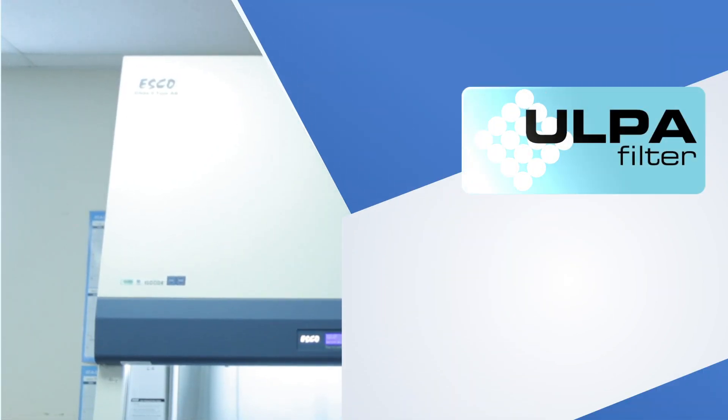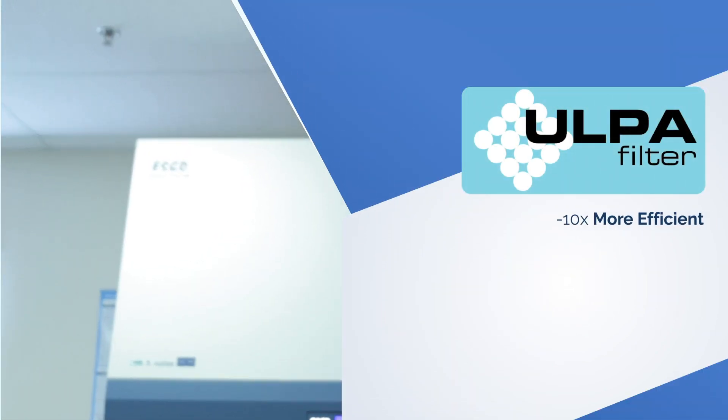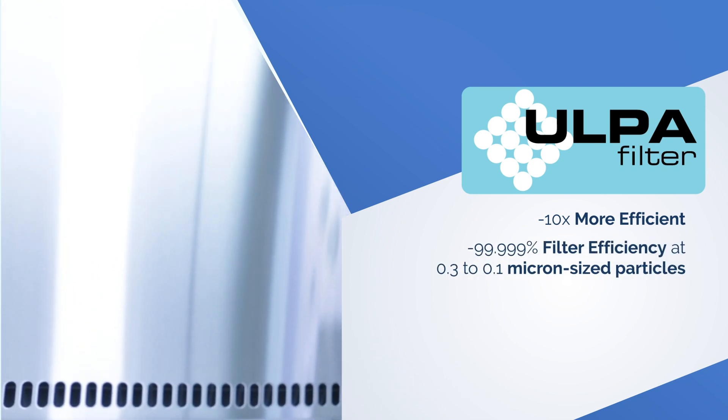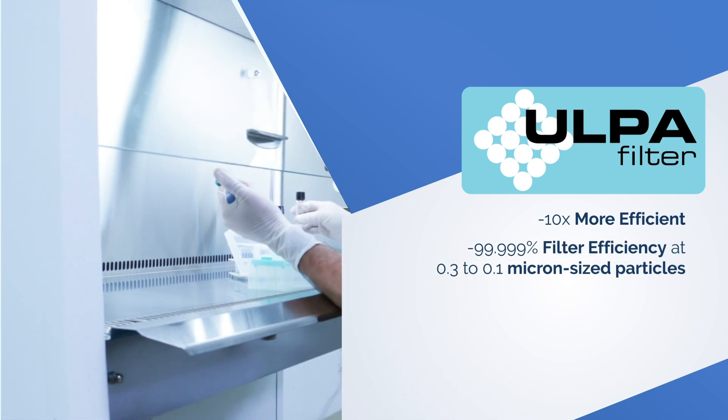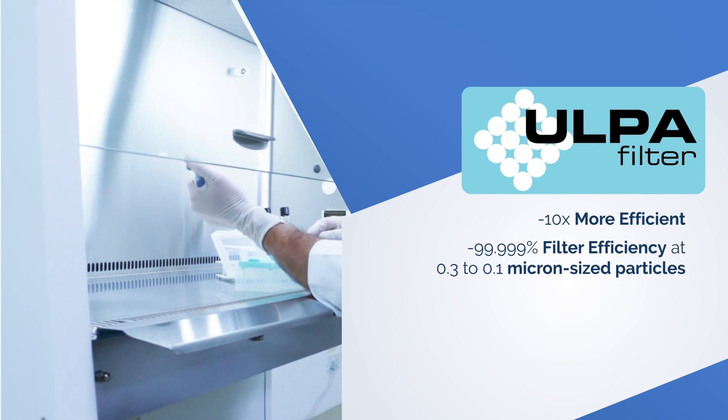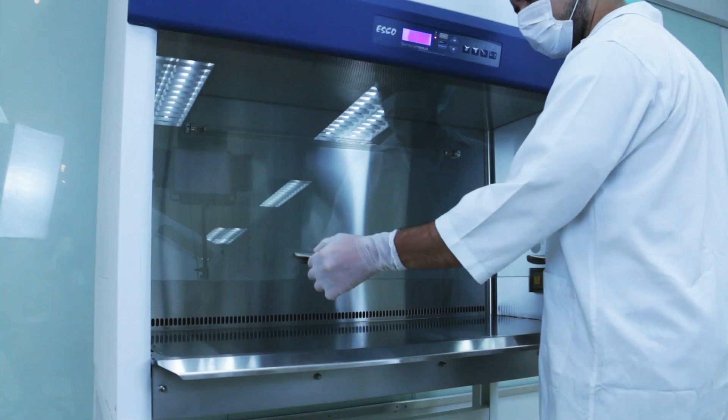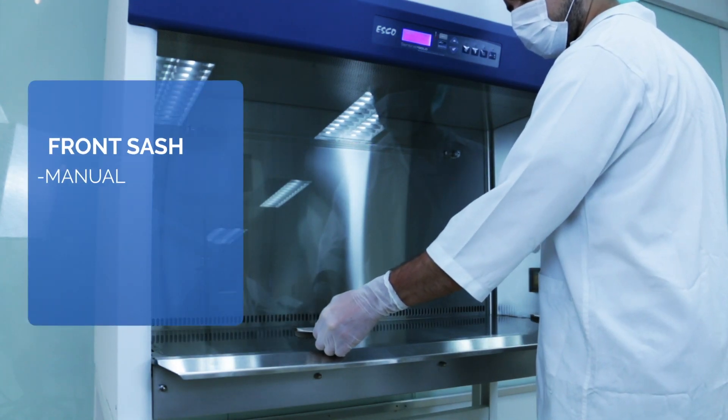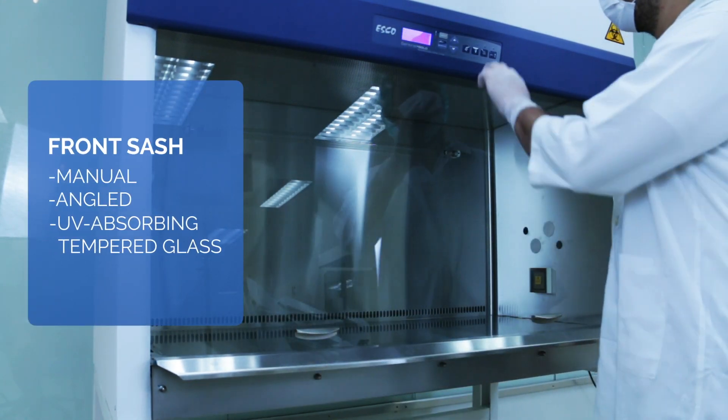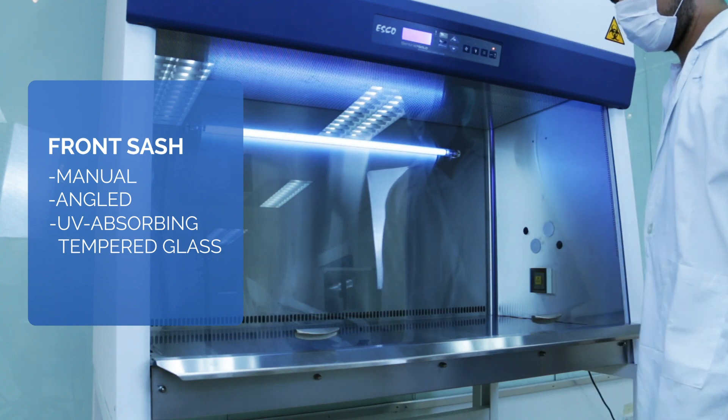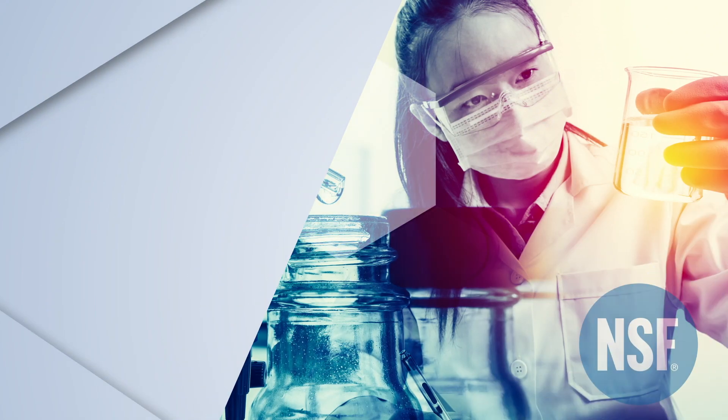Esco Biosafety Cabinet uses ULPA filtration system having 10 times more filter efficiency of 99.999% at 0.3 to 0.1 micron sized particles versus HEPA filter. Its manual angled UV absorbing tempered glass front sash can be operated even during power failure.